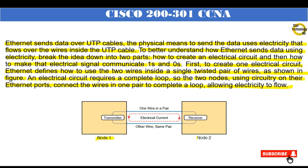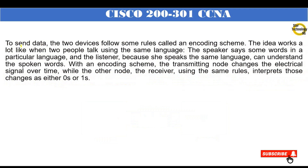Node 1 is the transmitter and node 2 is the receiver, using the same pair of wire to complete the electrical signal. To send data, the two devices follow some rules called an encoding scheme. The idea works like two people talking the same language — the speaker says words in a particular language and the listener, speaking the same language, understands. With an encoding scheme, the transmitting node changes the electrical signal over time, while the receiver, using the same rules, interprets those changes as either zeros or ones.